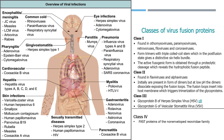Viral infections that affect only the skin sometimes result in warts or other blemishes. Many viruses that affect other parts of the body, such as chickenpox, also cause a rash. Some viruses, such as the Zika virus, the rubella virus, and cytomegalovirus, can infect the placenta and fetus in pregnant women.